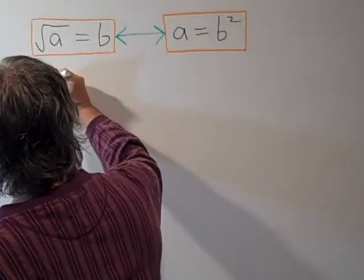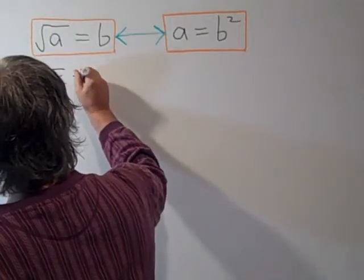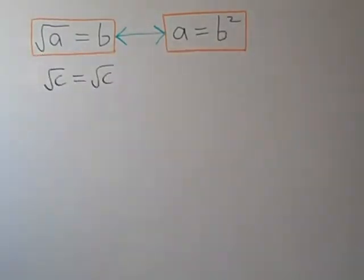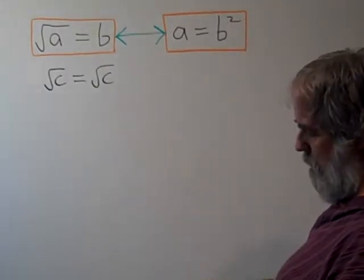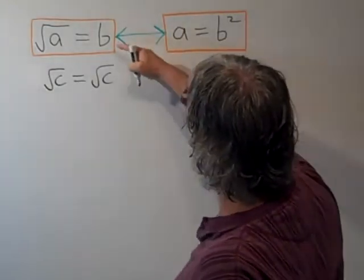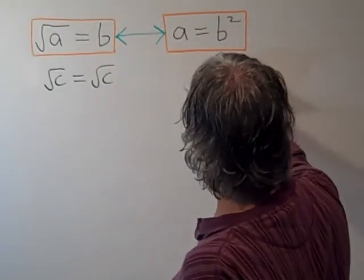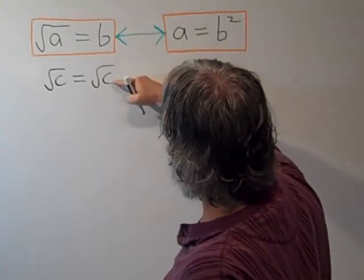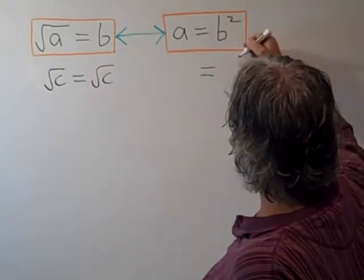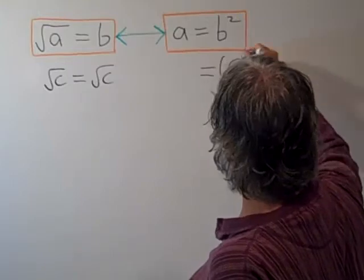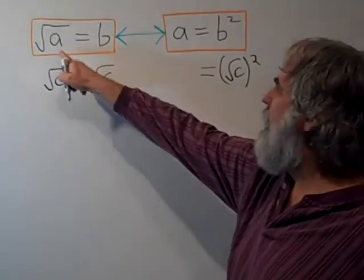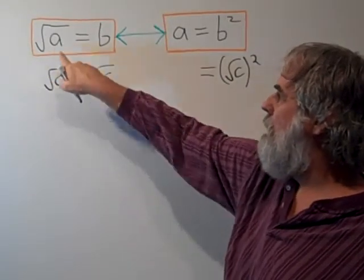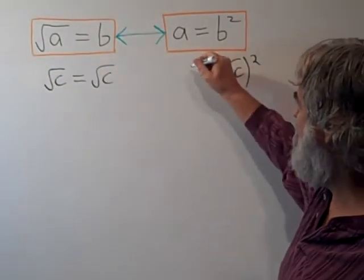If we start off saying, what if we wrote this as the square root of c equals the square root of c? That certainly must be true. What's the exponential form of this radical expression? Well, over here, b is the square root of c. So instead of b, we have the square root of c. So b squared is the square root of c squared. On the other hand, a is equal to c because the square root of a is the square root of c. A is the same as c.